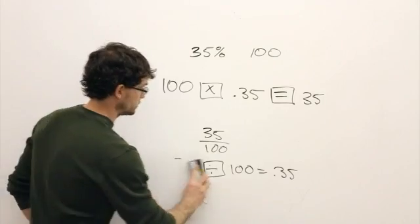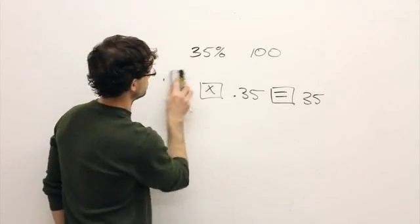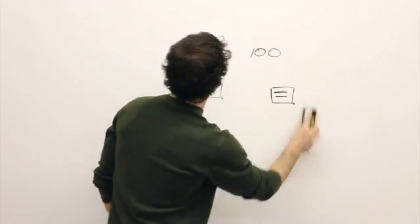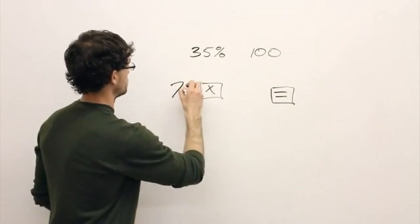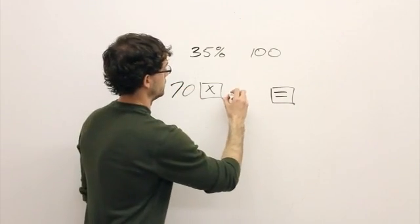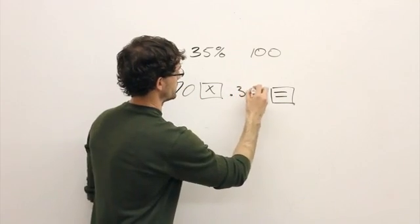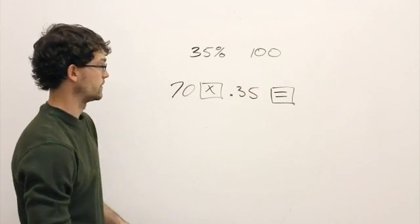So it's pretty straightforward. Let's try something different. Say we have 70 and we want to know what 35% of 70 is.